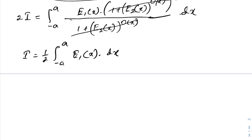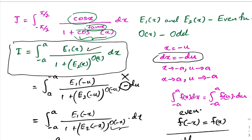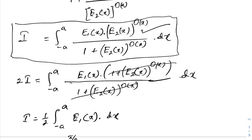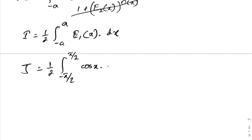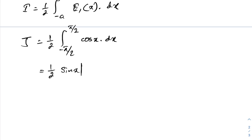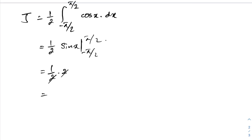Now we can easily evaluate our integral. We have I = one half times the integral from -pi/2 to pi/2 of cosine(x) dx, since e1(x) = cosine(x). This equals one half times [sin(x)] from -pi/2 to pi/2, which is one half times (sin(pi/2) - sin(-pi/2)) = one half times (1 - (-1)) = one half times 2 = 1. So the answer is 1. If you like this type of video, please subscribe to the channel — thank you for watching.